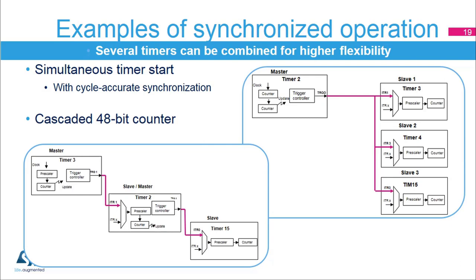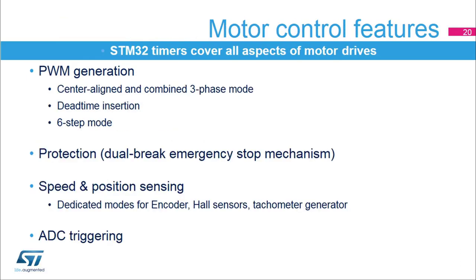The second example shows how to create a 48-bit timer by cascading three timers. The update event generated on counter rollover is used as the input clock for the following slave timer. Timer 3's counter holds the least significant 16 bits, timer 2's counter holds the medium bits, bits 16 to 31, and timer 15 holds the upper bits from bit 32 to bit 47.